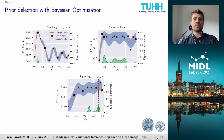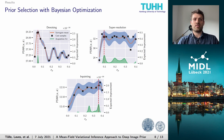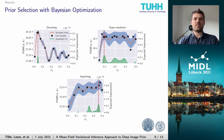Coming to the results of the experiments: before we look at the results of the actual inverse process, we must take a look at our Bayesian optimization of the prior for all three tasks. As acquisition function, we use the expected improvement, where the green area represents the evaluation of that acquisition function and we always choose the maximum for the next candidate. As can be seen, in each task a distinct optimum can be found, with denoising and super-resolution having their maximum at very narrow priors while the prior for inpainting can be chosen broader.